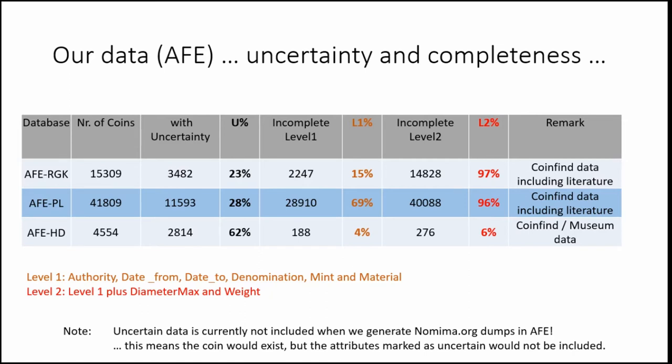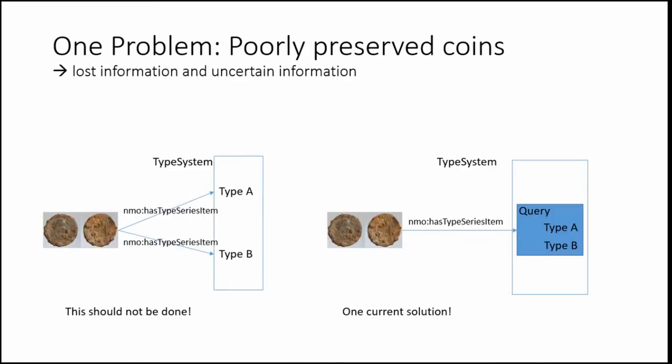Carsten has taken this data and, using the ontology and language of numisma.org — the numismatic linked open data resource — he's using it as a way of checking the quality of the data. For example, if I have a coin with two possible identifications in Online Coins of the Roman Empire, how do I model it? One way would be to simply link it to both entries, but that's not actually right because the coin isn't definitively either of those entries.